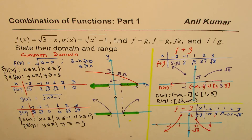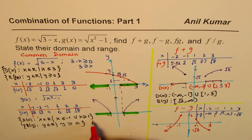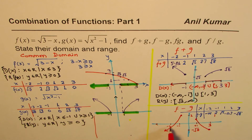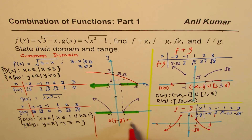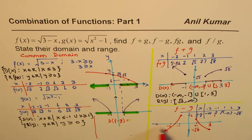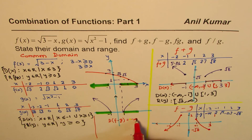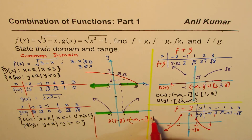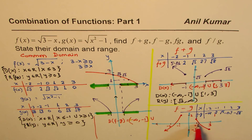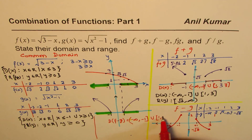The domain of f minus g is from minus infinity to minus 1 — where minus 1 is included and infinity is not — union 1 to 3, where both 1 and 3 are included.